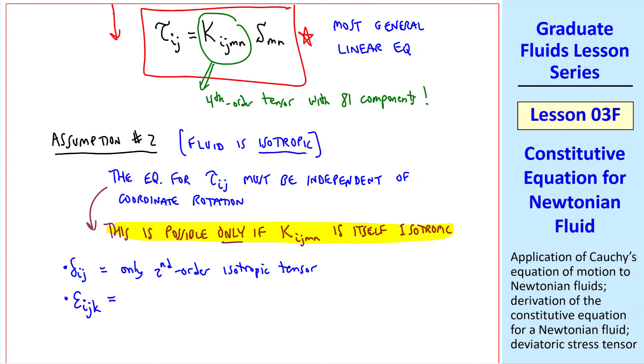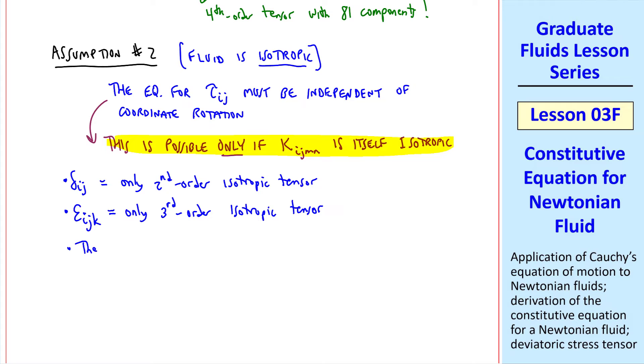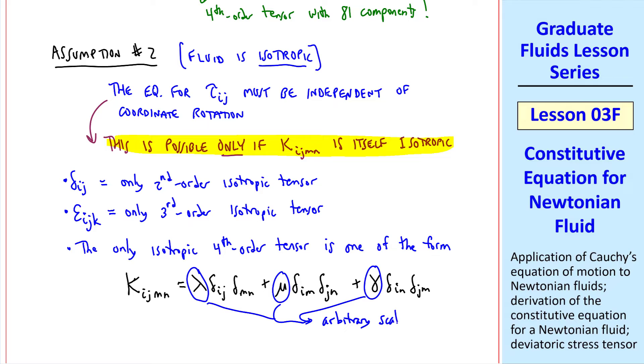Similarly, epsilonijk, the alternating or permutation tensor, is the only third-order isotropic tensor. What about fourth-order? It turns out that the only isotropic fourth-order tensor is one of the form kijmn equals some coefficient lambda deltaij deltamn plus some other coefficient mu deltaim deltajn plus a third coefficient gamma deltain deltajm. These coefficients, lambda, mu, and gamma, are arbitrary scalars.